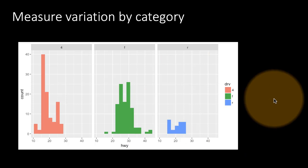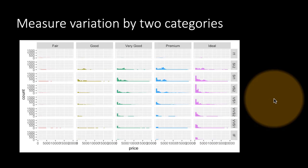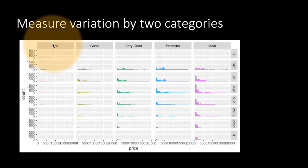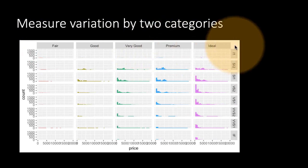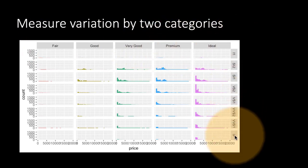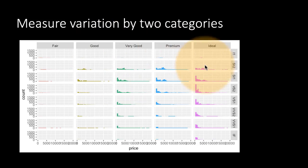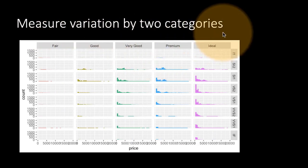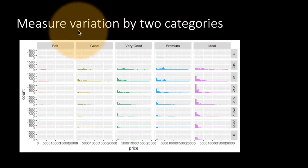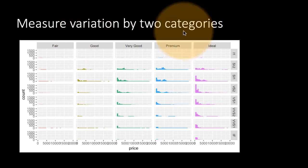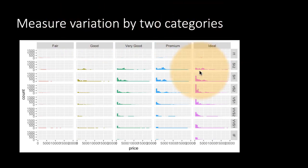Just by extending the previous idea of looking at measure variation by category, we can also look at measure variation by double categories. For example, here we've got the cut of the diamond, here we've got the clarity of the diamonds. And then we can see how the measure variation happens and we could get some insights there. This is a general question: any dataset in which you have at least one measure and at least two categories, you can do this analysis.